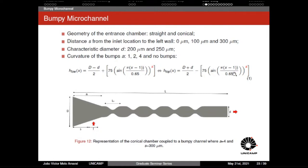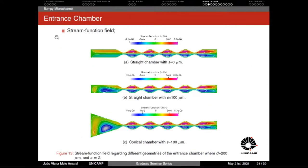The exponent 'a' appears in the equations for the bump position on the lower and upper walls. A value of a = 4 gives the sharpest bump, while a = 1 gives the smoothest bump. In the first analysis, we examine the stream function field in the entrance chamber. In the second and third cases we can see recirculation forming both upstream and downstream of the feed.